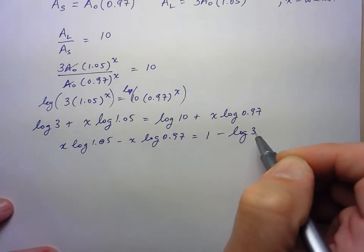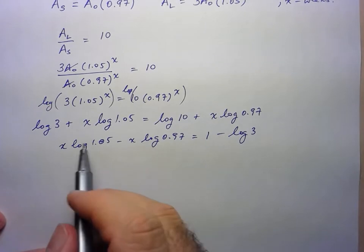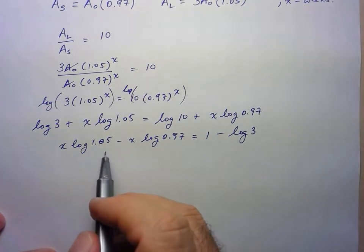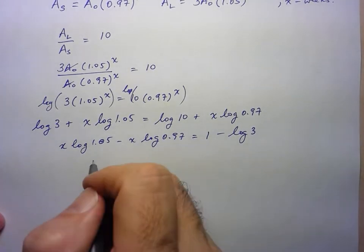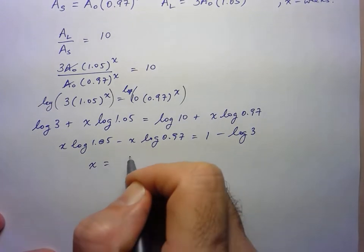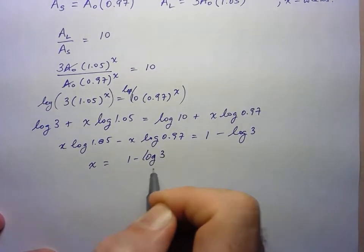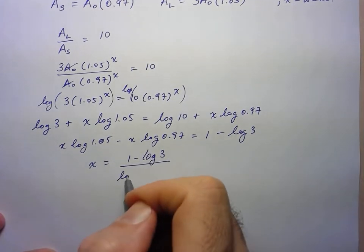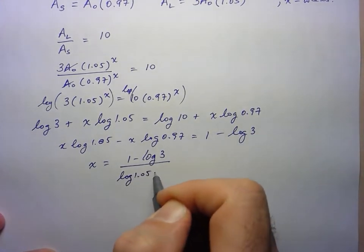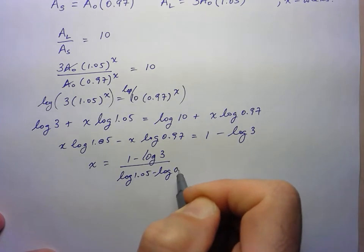And so here, I can factor out the X and then I'm going to divide that to the other side. So I'm just left with X equals 1 minus log of 3 over log of 1.05 minus log of 0.97.